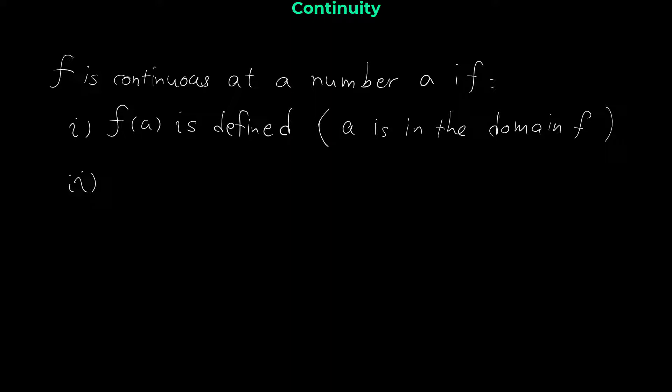The second condition is that the limit of the function when x approaches a should exist. The limit of the function should exist, which means that the left limit and the right limit of the function should exist and be equal to each other.